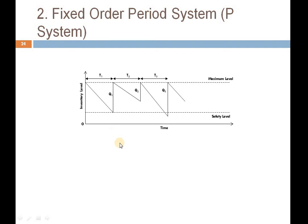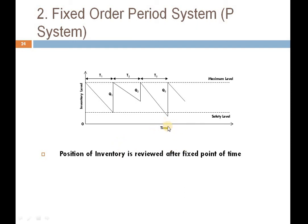Let us understand what the fixed order period system does. It determines the position of inventory, which is reviewed after a fixed point of time. In the Q-system, as the consumption pattern touched the reorder level, we would place orders O1, O2, O3. Similarly here, orders are placed after a fixed point of time.